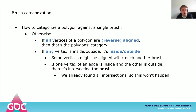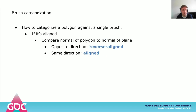To categorize a single polygon against a brush, it's a matter of categorizing all the vertices like before. If all vertices are the same category, that's the category. If some vertices are aligned but the rest are inside or outside, then the whole polygon is inside or outside. If some vertices are inside and others are outside, then the polygon will be intersected by a brush — but since we already found all the intersecting pieces at the beginning, we know this won't happen at this point. Finally, if a polygon is aligned, we can compare the normal of the polygon with the normal of the plane we're aligned with. If they both point in the same direction, the polygon is aligned; otherwise, it's reverse aligned.